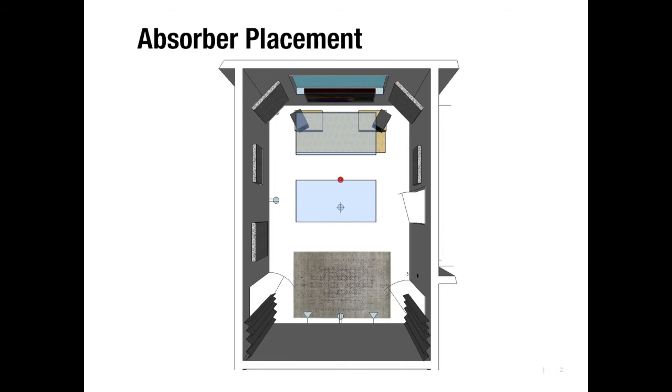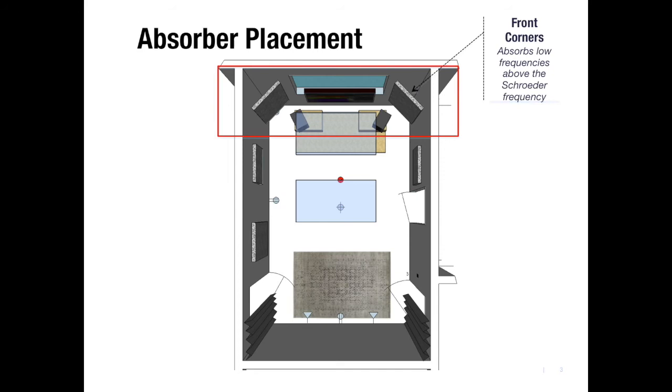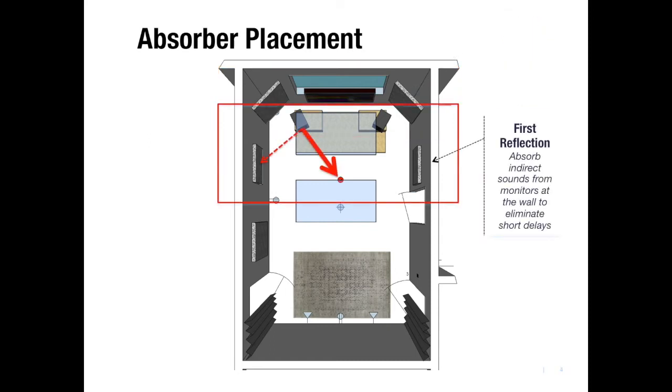So within the room, there are five areas where absorptive materials are placed. The first area is the front corners. I'll do this to soak up any low-frequency buildup since this is where the lower modes have the most energy. The absorbers will correct for the RT60 in those octaves above the Schroeder frequency for the room. The second area is the first reflections. Panels are placed on the right and left-hand walls between the desk and the mixed positions. These absorb indirect sound energy from the monitors that would reflect off the side walls. If not treated, these delayed sound reflections would return to the mixed position and diminish the clarity of speech and of music.